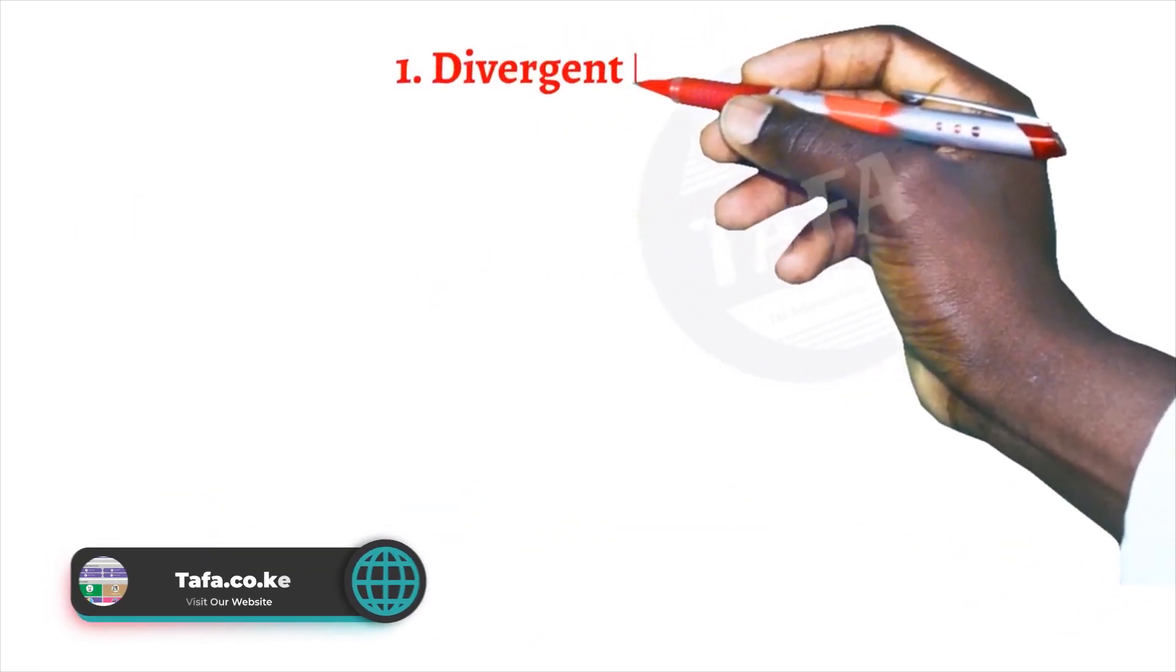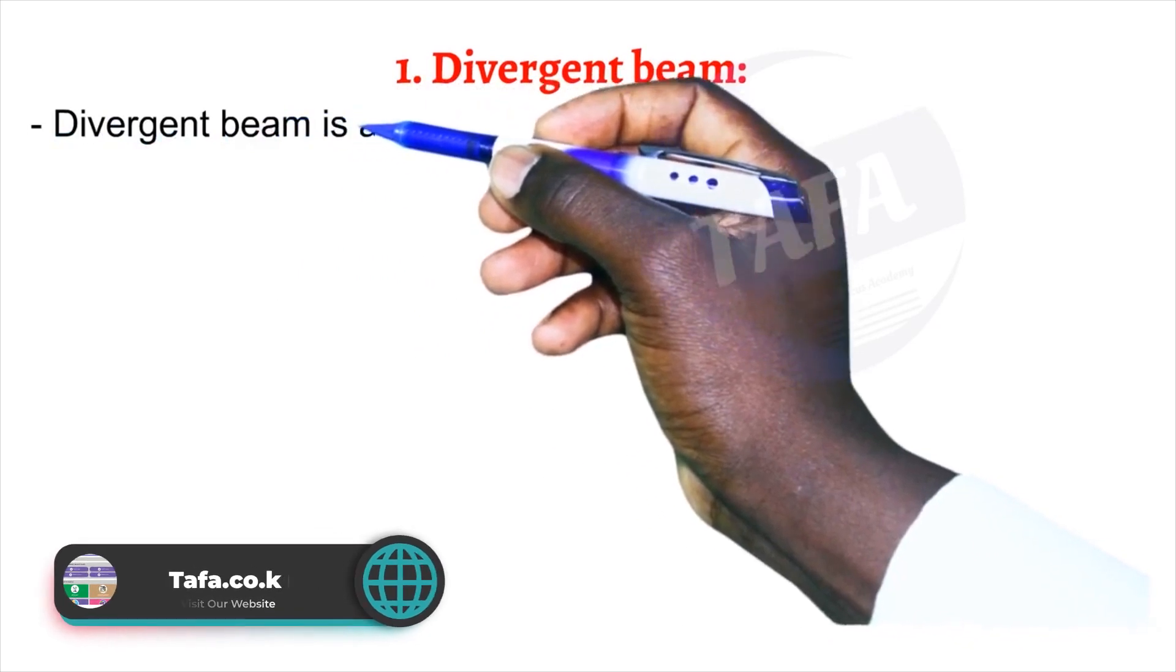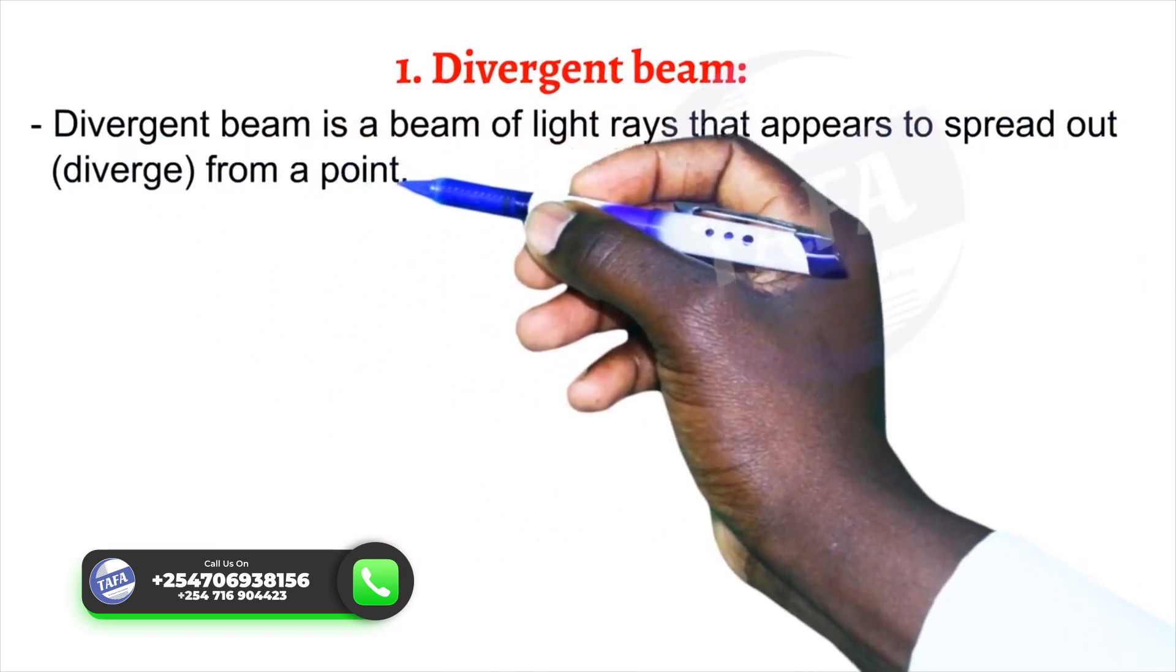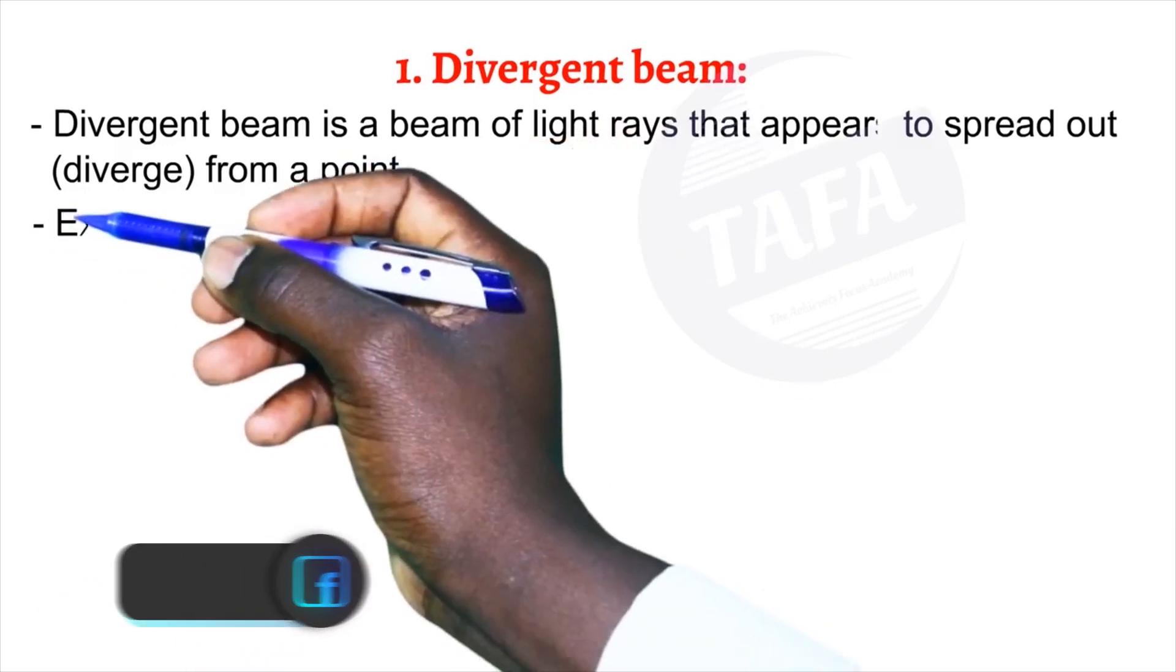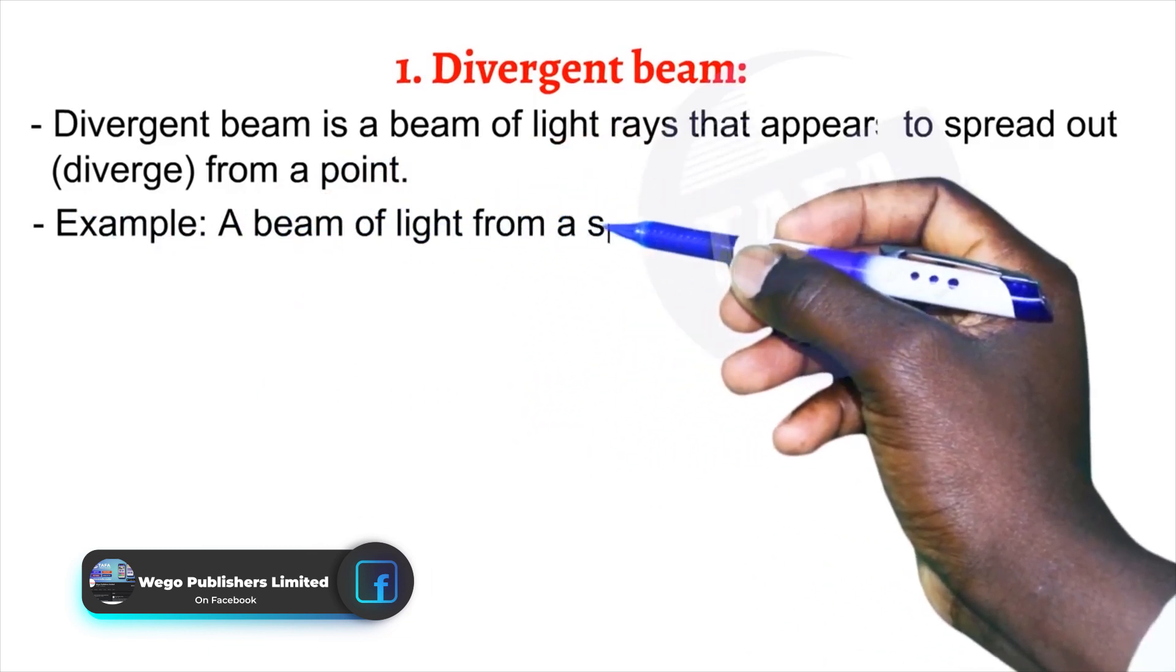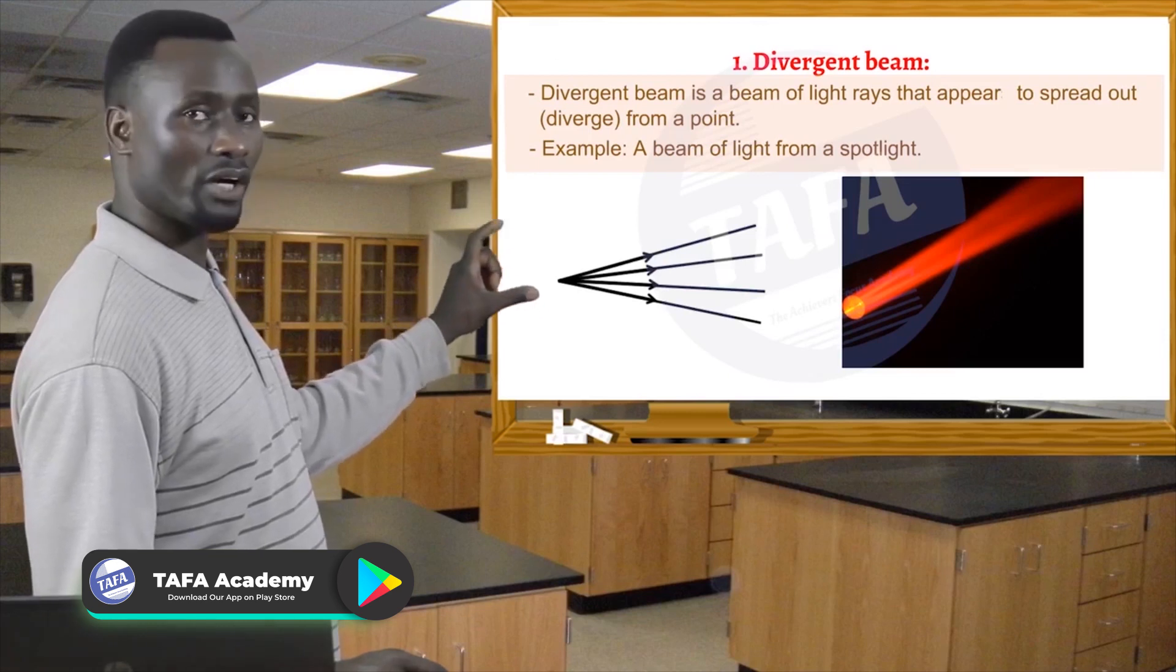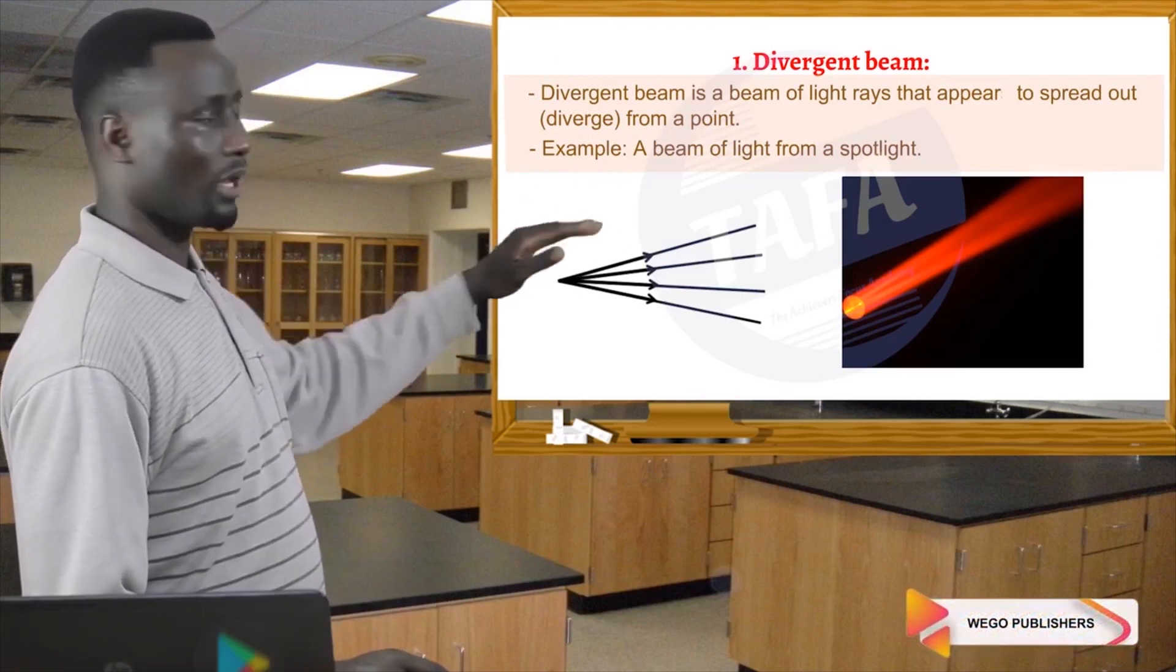Divergent beams. A divergent beam is a beam of light rays that appear to spread out or diverge from a point. Example: a beam of light from a spotlight. This diagram shows a group of rays of light diverging from a point.